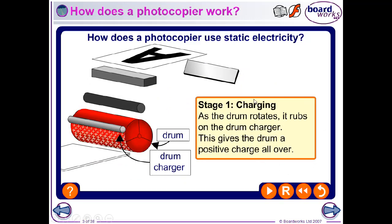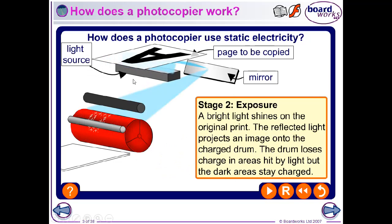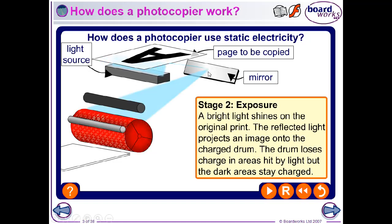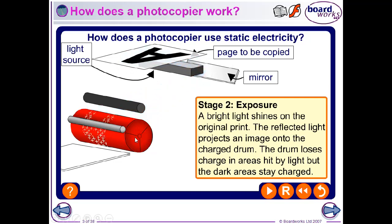When we switch on the photocopier and it starts up, the big drum rotates and rubs on the drum charger, which gives the drum a positive charge all over its surface as it turns. A page to be copied is placed on top and the light source shines light onto the paper. Where there's black, the light gets absorbed, and where there's white, the light gets reflected to the mirror. The reflected light is then shone onto the drum, and where the light hits the drum, it loses its charge.